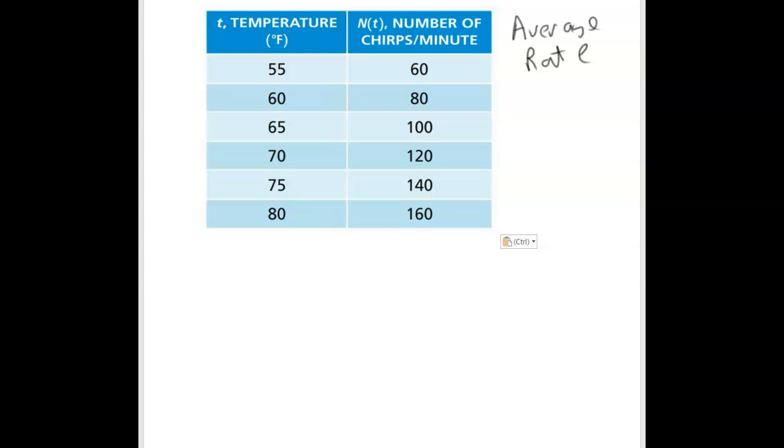This example that I have here is actually from your book, activity 3.5, the Snowy Tree Cricket. What we see here, our inputs are over here and our outputs are over here, which is pretty typical. We have temperature for the input and the output is the number of chirps per minute of a cricket.